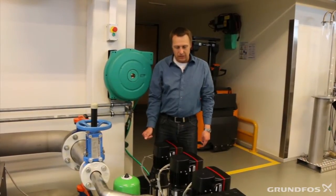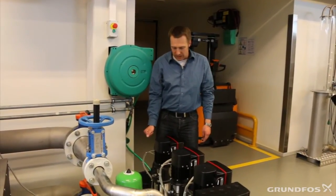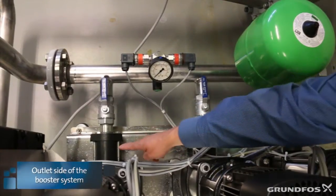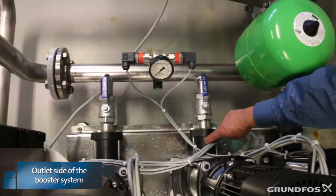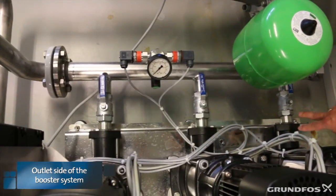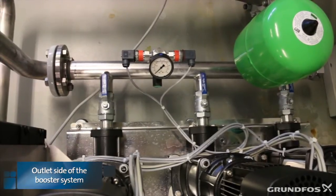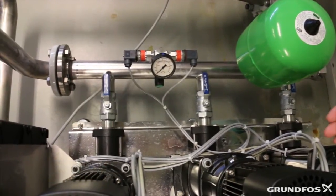Okay, now we'll have a look on the outlet side of the boosting station. What we see here is a non-return valve on each of the pumps. This prevents the water from going back when we switch off the pumps.